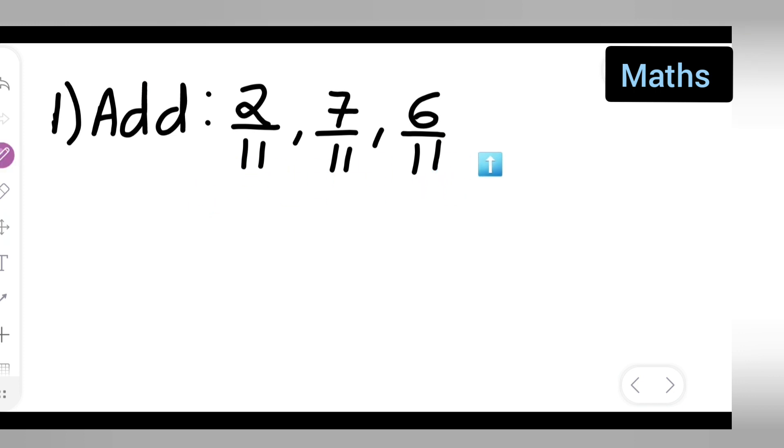plus 7/11 plus 6/11. Okay, first add all these three numbers. After that, what I'll have to do is write it as 2 plus 7 plus 6